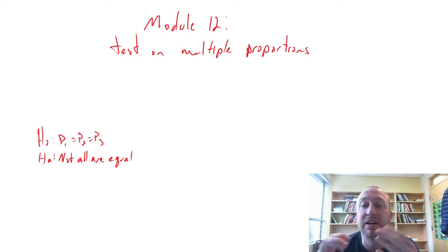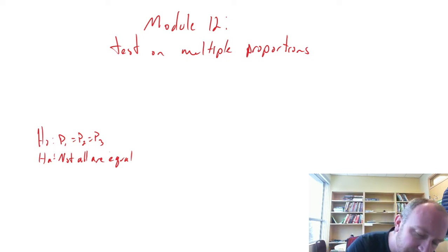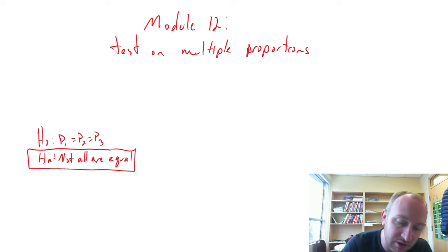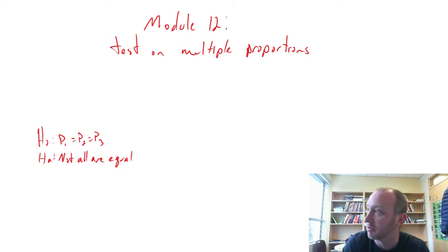And then we have another procedure that we'll look at in the event that we do reject the null hypothesis. If we reject it, well then we have this issue that okay not all of them are equal, so where does the difference arise? And so we'll look at some follow-up tests that we can do to identify where a difference might exist.